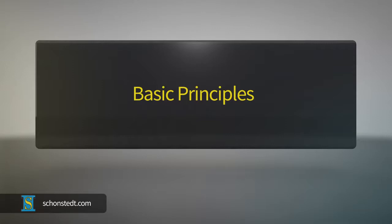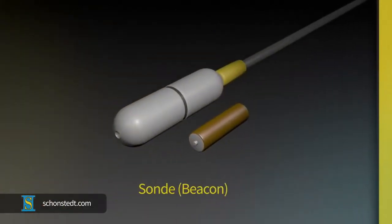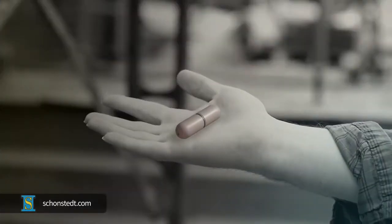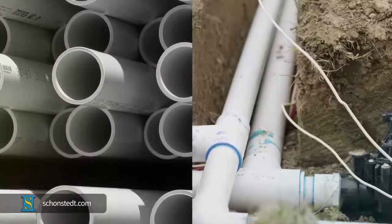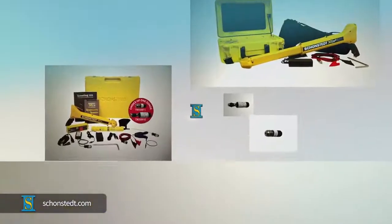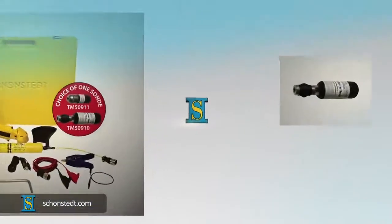The principles of sonde locating. A sonde, sometimes referred to as a beacon, is a small battery-operated transmitter that typically fits in the palm of your hand and can be inserted inside PVC pipes and traced or detected with Shonset's pipe and cable locator receivers or with dedicated sonde locators.